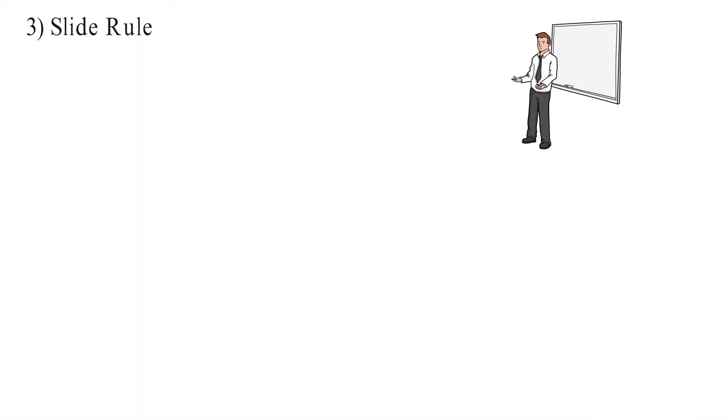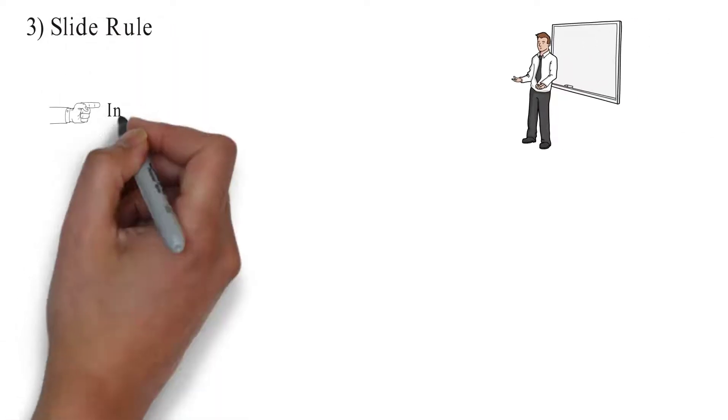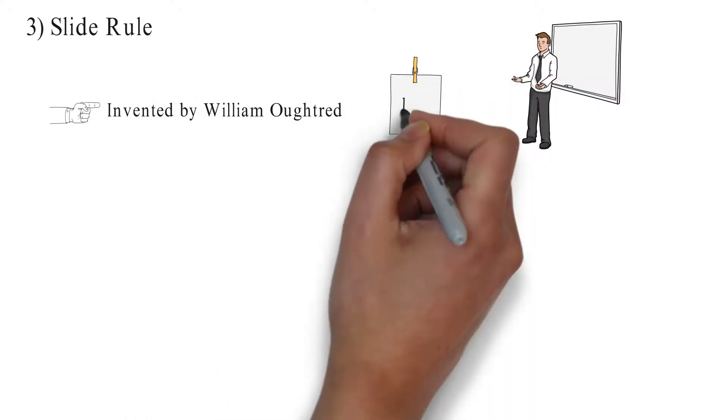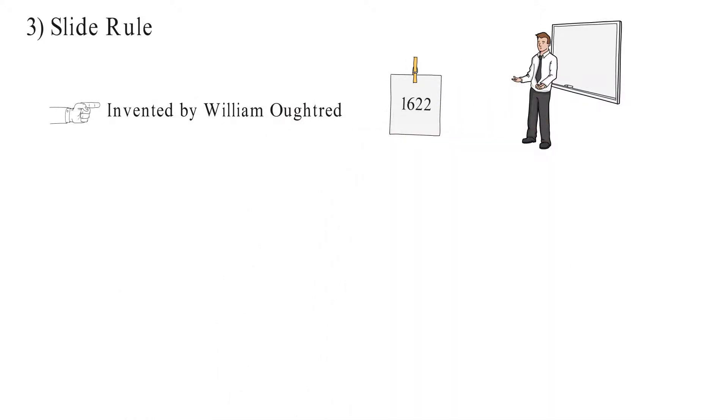Number 3: Slide rule. The slide rule was invented by William Oughtred in 1622. It was based on logarithms.